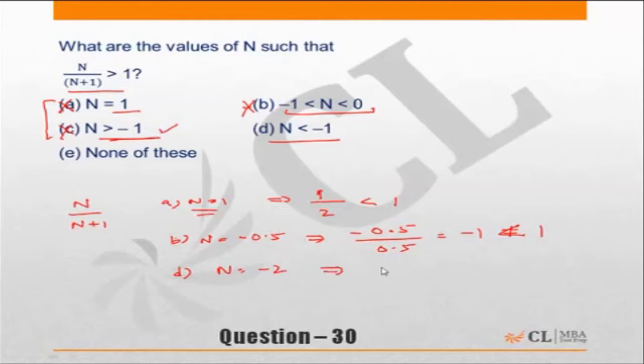If n = -2, the numerator becomes -2, and the denominator becomes -2 + 1 = -1. So -2/(-1) = 2, which is greater than 1. This choice satisfies the condition, so the correct answer is choice D.